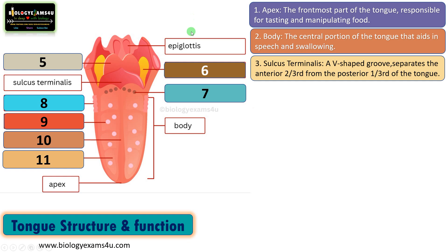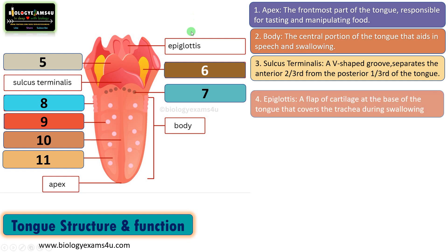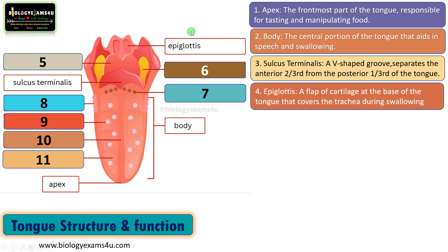The next structure is the epiglottis. The epiglottis is a flap of cartilage located at the base of the tongue that covers the trachea during swallowing to prevent food from entering the airway.